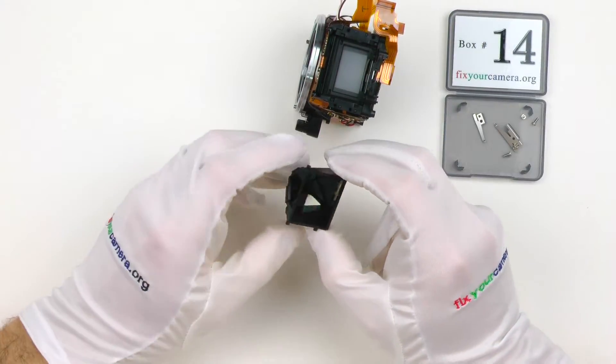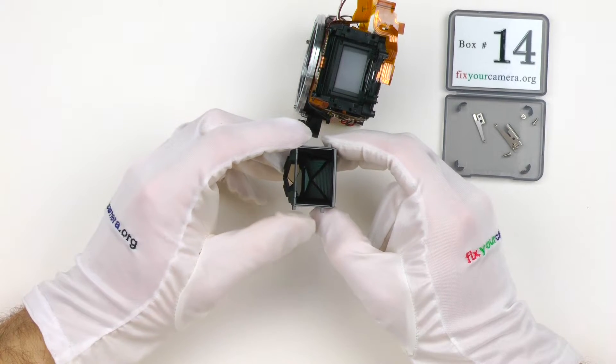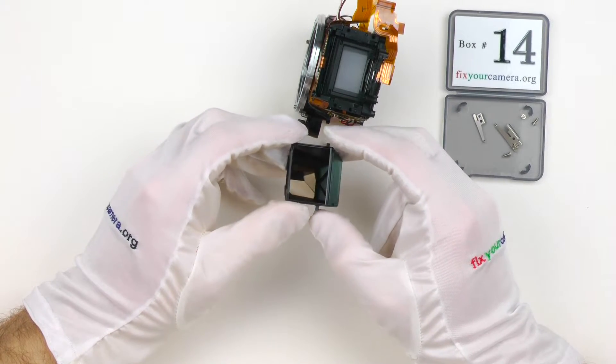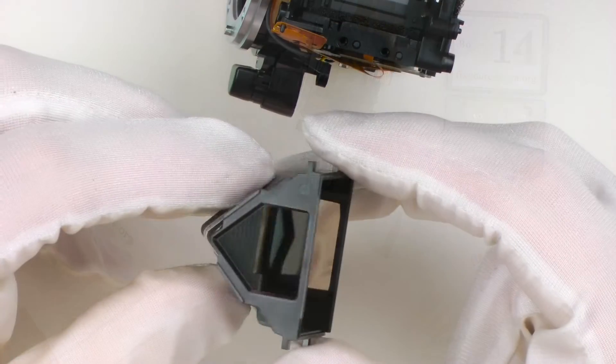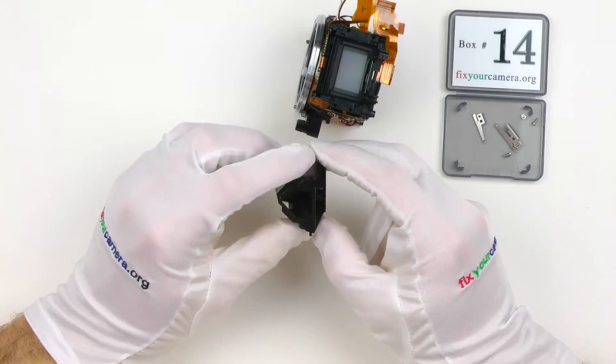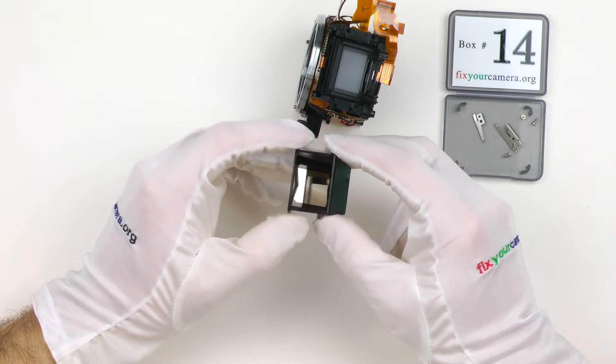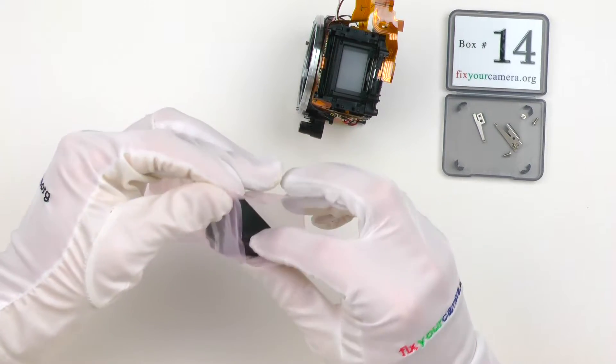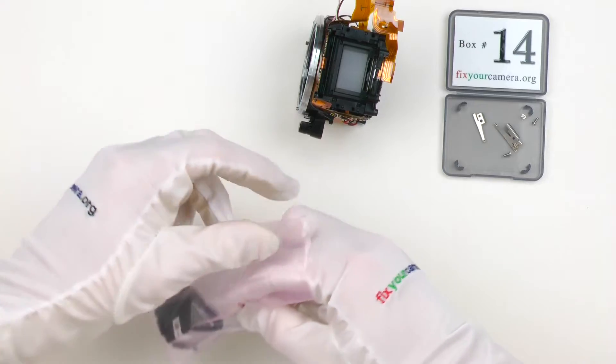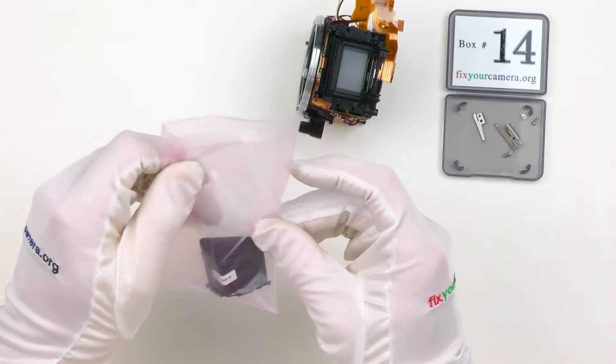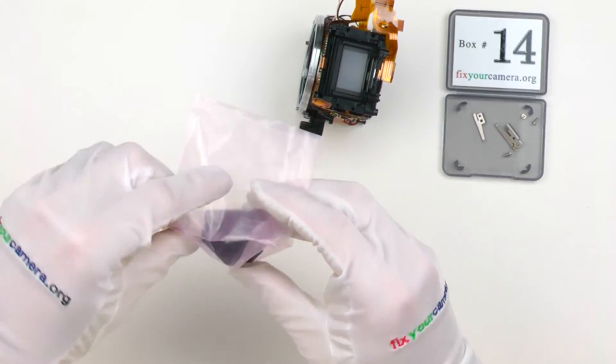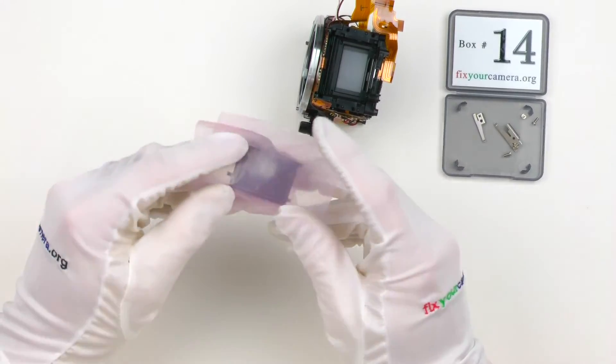Very important thing about pentamirrors. It's extremely hard to clean the reflective surface without scratching it. The reflective layer is extremely thin and there are some specific ways of cleaning these, but I don't want to go over it right now. If I have to remove this part while working on a camera, I put it into a clean bag right away and also make sure that the bag is not touching the reflective surface.